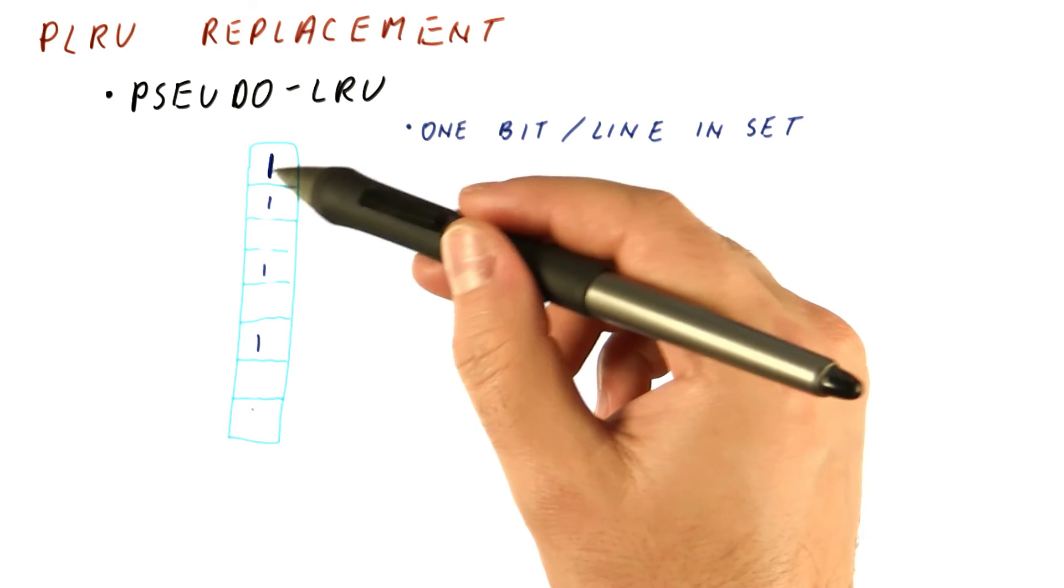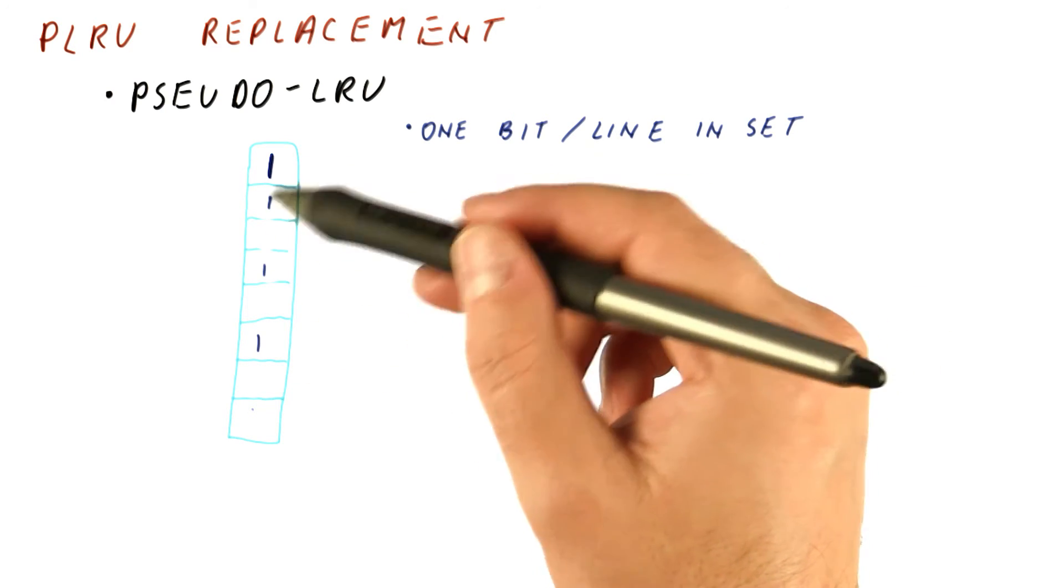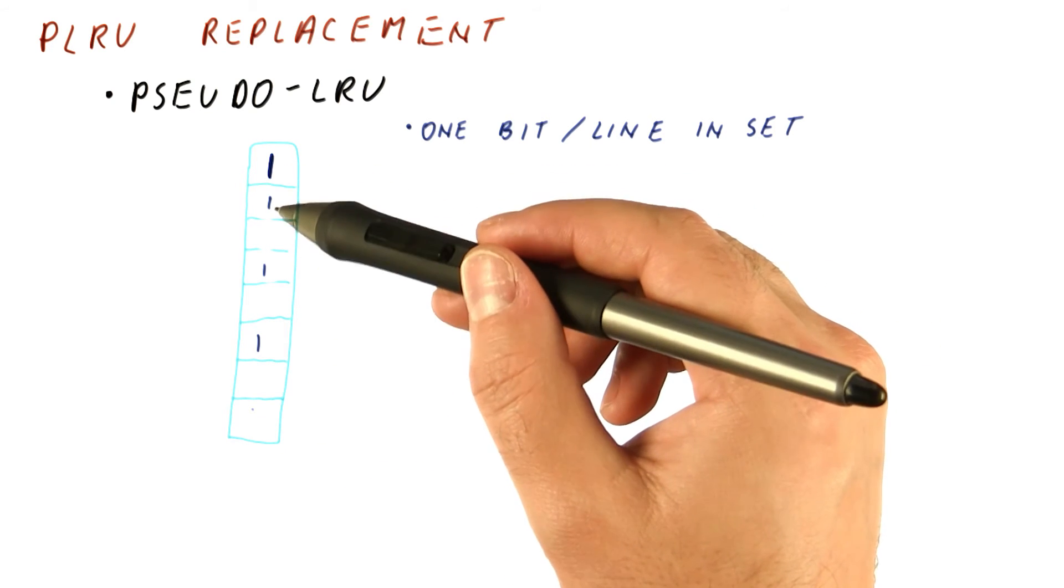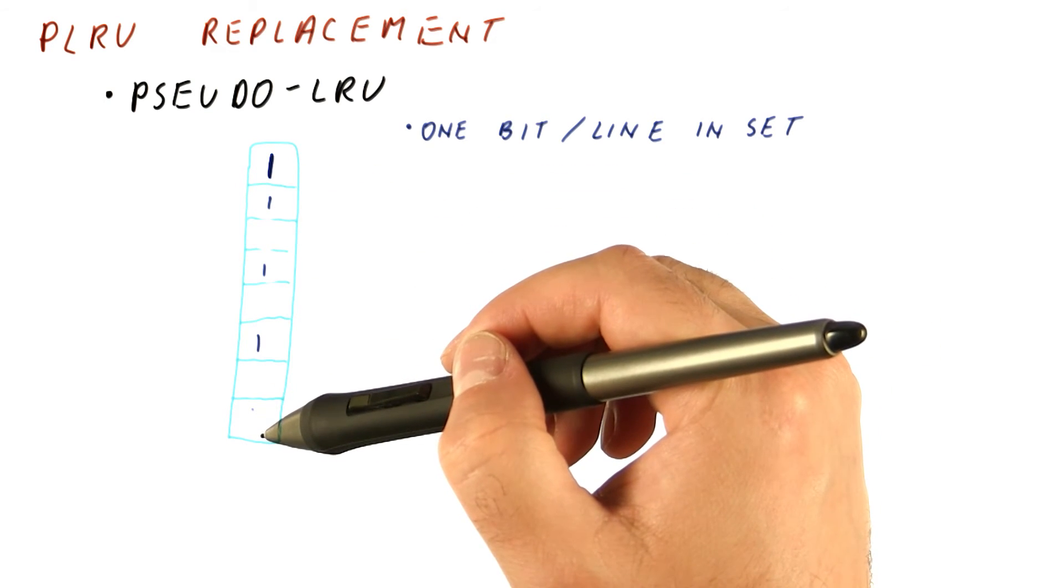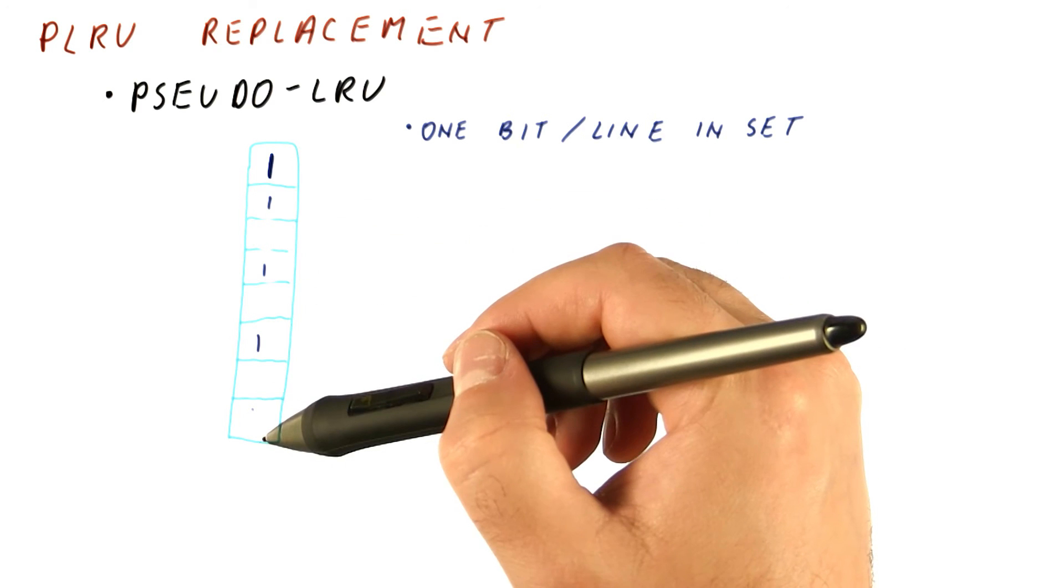We have seen that when one bit is set, we are effectively implementing the NMRU policy. When more than one bit is set, but not almost all of them, we are in between.